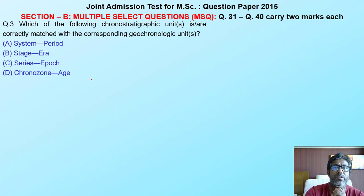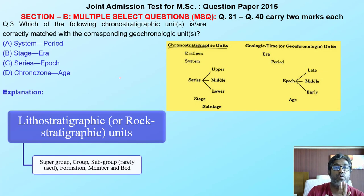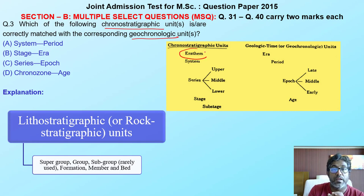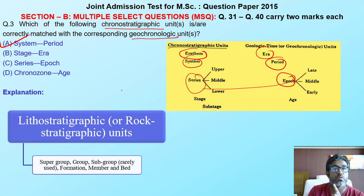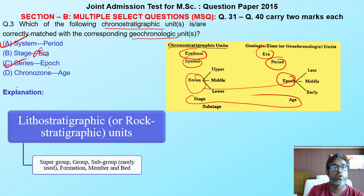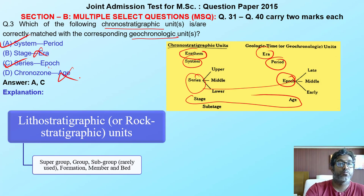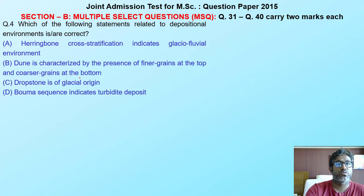Moving to the next question about chronostratigraphy and geochronology. Eonothem is related to era, system is related to period — so option A is correct. Series is related to epoch — that is also correct. Stage is related to age, not era. Chronozone is a relative unit, not a standard geochronologic unit. My correct options are A and C.